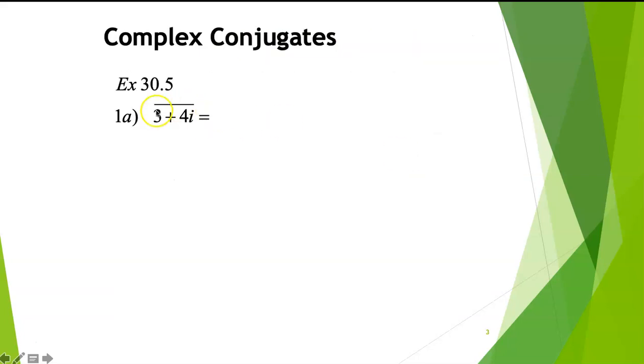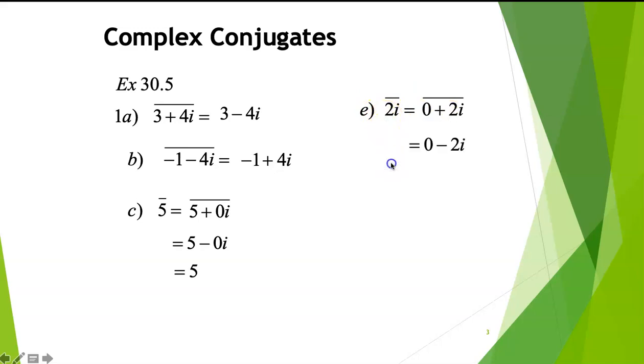Now, for example, if you've got 3 plus 4i, the conjugate of that is 3 minus 4i. The conjugate of negative 1 plus 4i is negative 1 minus 4i, only the opposite sign of the imaginary component. The conjugate of 5 is just 5 because there is no imaginary component. The conjugate of 2i is the opposite sign of the imaginary component, so it will be negative 2i. Double conjugate, meaning conjugate of the conjugate, will return to the same number.